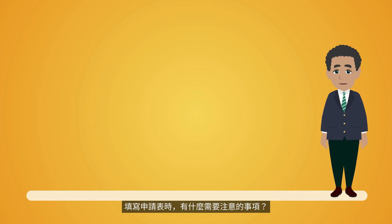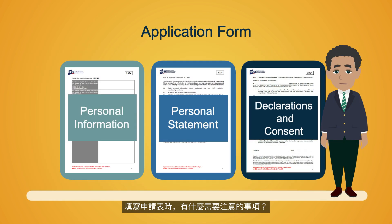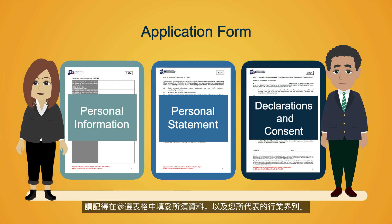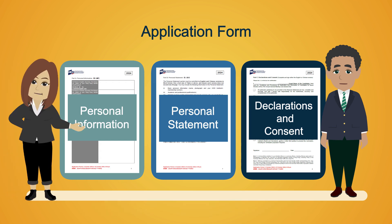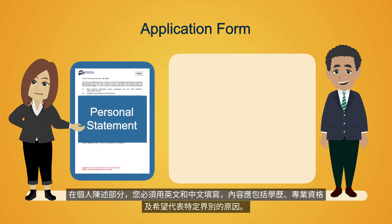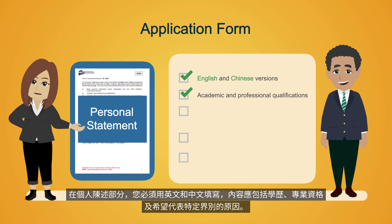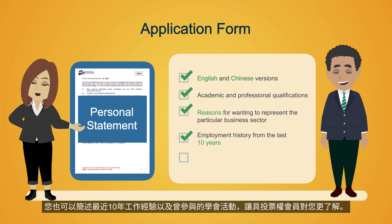Is there anything I should look out for when filling in the application form? Well, remember to provide all the required details in the form and the business sector that you will be representing. On the personal statement section, you must prepare it in both English and Chinese. It should include your academic and professional qualifications, as well as your reasons for wanting to represent the particular business sector. You may also include your employment history from the last 10 years and your involvement in HKSI Institute activities.